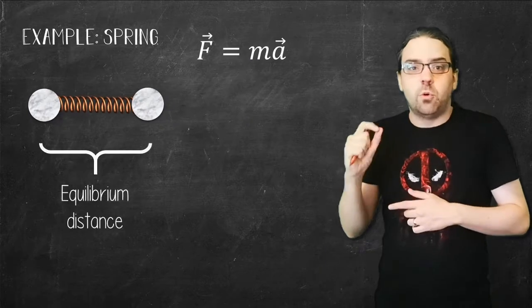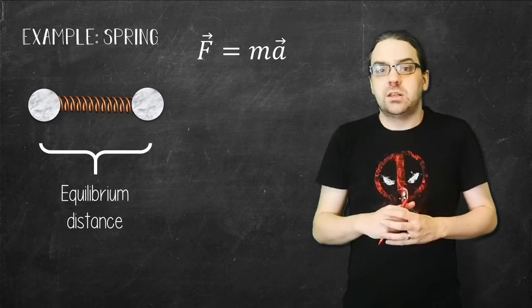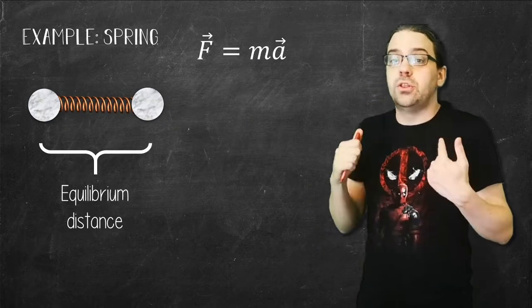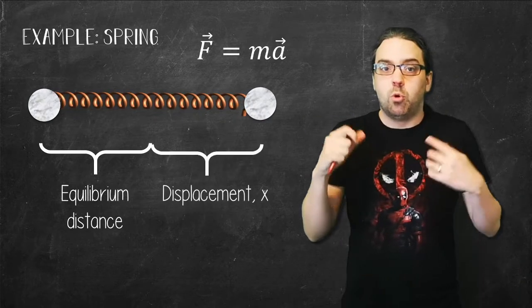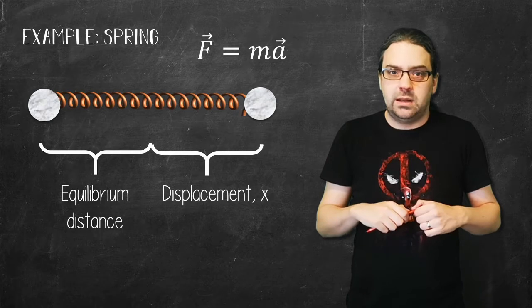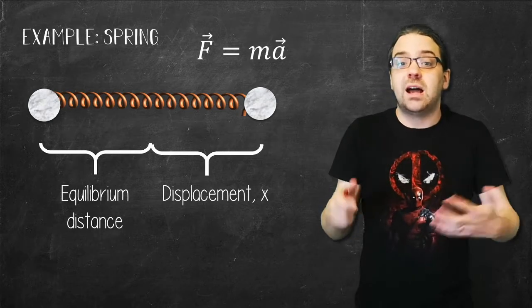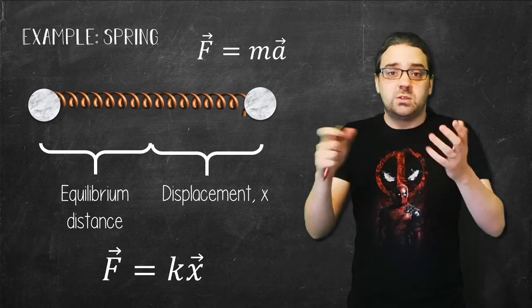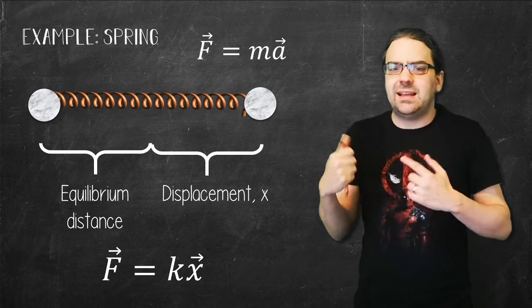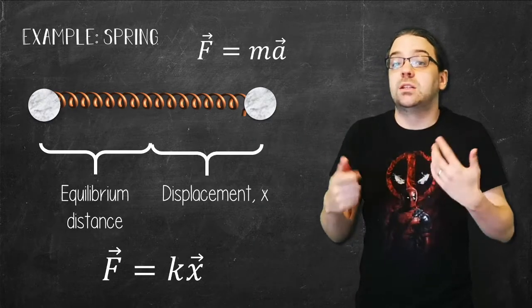For a spring, the force applied to these masses is directly proportional to the displacement of the spring from its equilibrium or resting length. That gives us something to put on the other side of that equation. The displacement, which we'll label x, multiplied by a proportionality constant k.